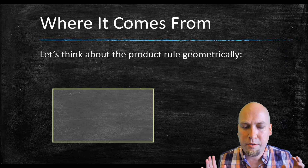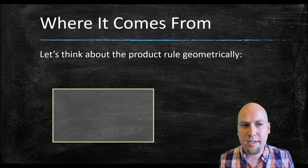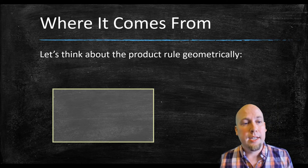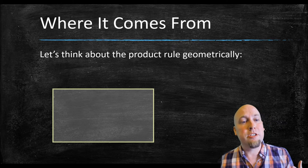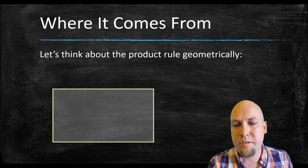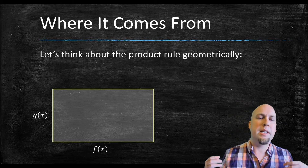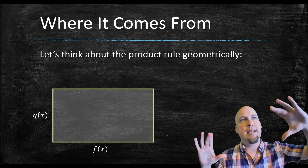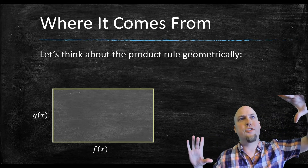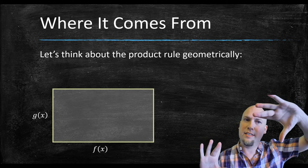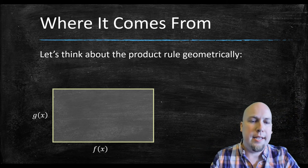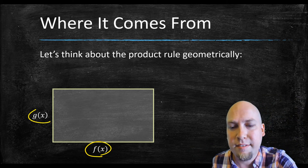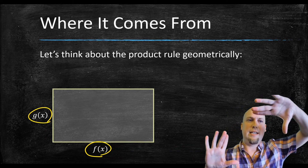Now let's talk about where the product rule comes from and why you should believe it. We can think about it geometrically — draw a rectangle whose size changes over time. Here x measures time, and f(x) and g(x) measure the lengths of the two sides of the rectangle. As x or time changes, the side lengths change, and the area is just f(x) times g(x).